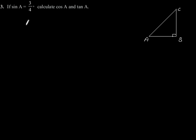In the question, it is given that sin A is equal to 3 by 4, which means BC by AC is equal to 3 by 4.